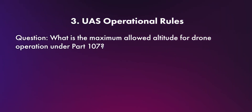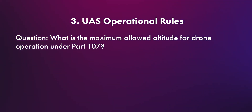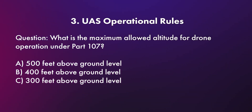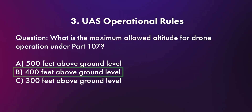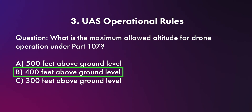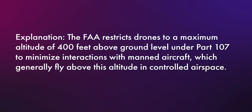Question three has to do with UAS operational rules. What is the maximum allowed altitude for a drone operation under Part 107 — A) 500 feet above ground level, B) 400 feet above ground level, or C) 300 feet above ground level? The correct answer is B, 400 feet above ground level. The FAA restricts drones to a maximum altitude of 400 feet above ground level under Part 107.